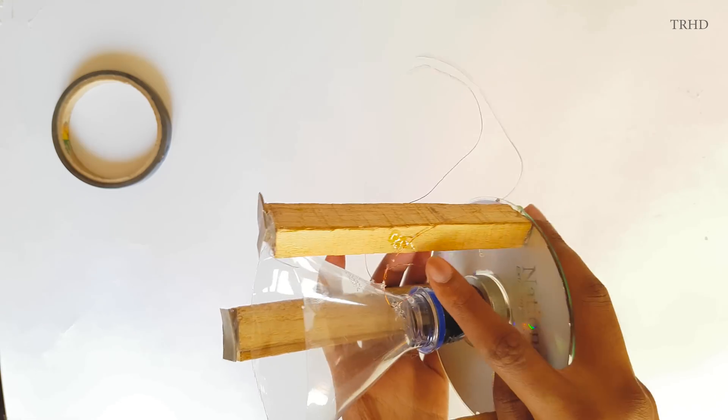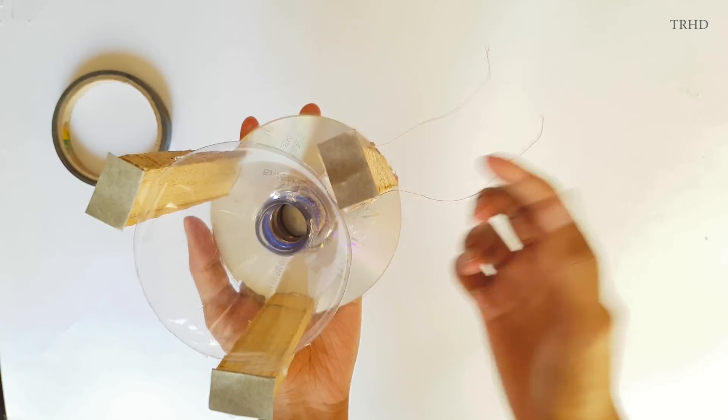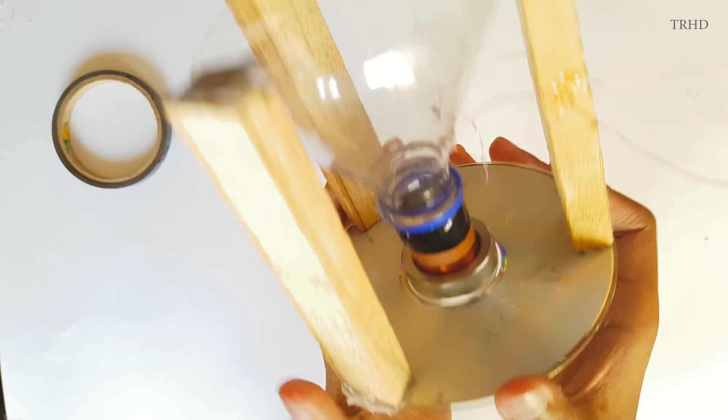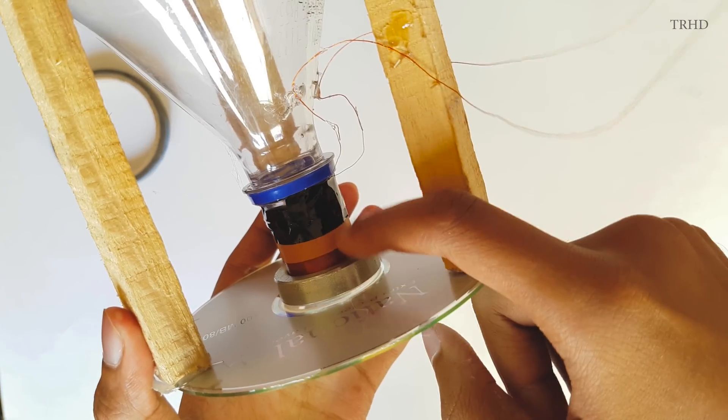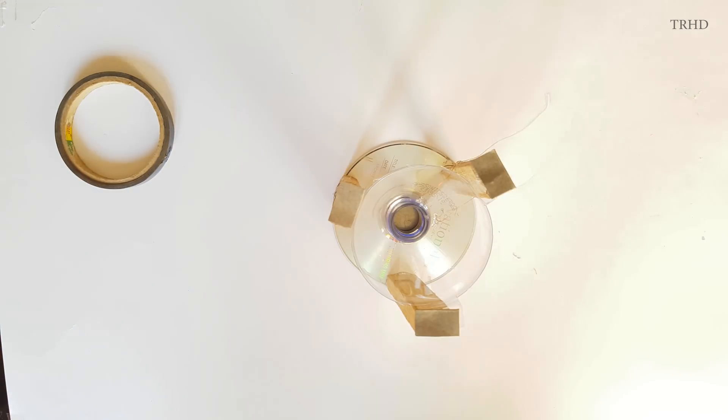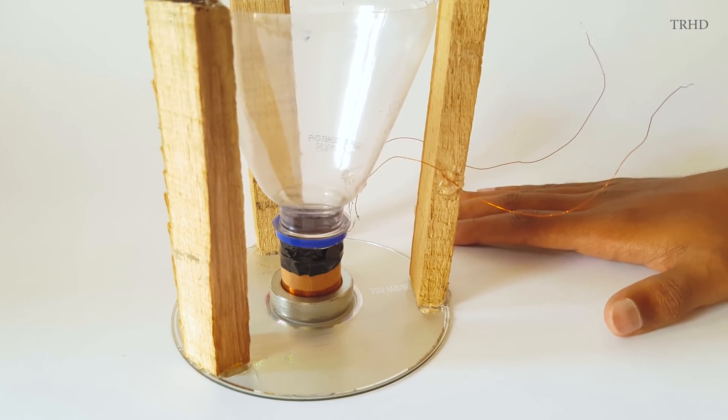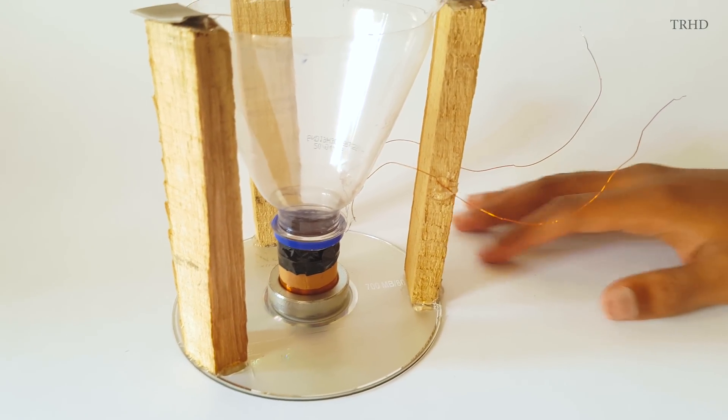The assembling part of the speaker is done. This is how I fixed the connection wires to this speaker. These connection wires will go to the amplifier. And this is the magnet and the voice coil arrangement. Just have a look at it. It is very simple to make this. So this is how our speaker looks like. The assembling part is done. All we need to do is test this speaker.